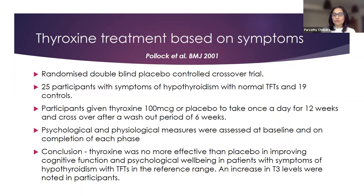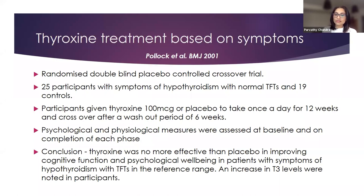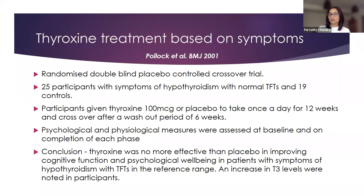The Pollock study is a well-cited randomized double-blind placebo-controlled crossover trial looking at thyroxine treatment based on symptoms. There were 25 participants with symptoms of hypothyroidism who were actually euthyroid individuals, and 19 asymptomatic controls. Participants were given thyroxine 100 micrograms or placebo once daily for 12 weeks. After a six-week washout period, they were crossed over. The conclusion was that thyroxine was no more effective than placebo in improving cognitive function and psychological wellbeing in euthyroid patients. In fact, those given levothyroxine tended to do worse compared to those on placebo, and an increase in T3 levels was also noted.